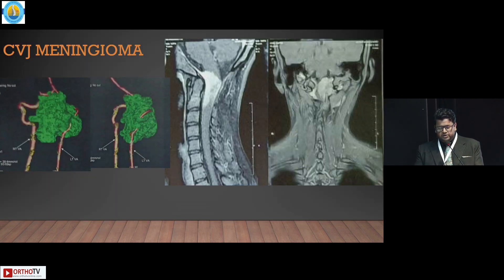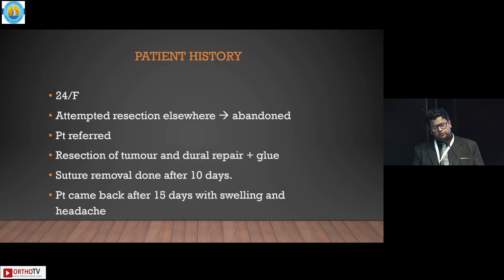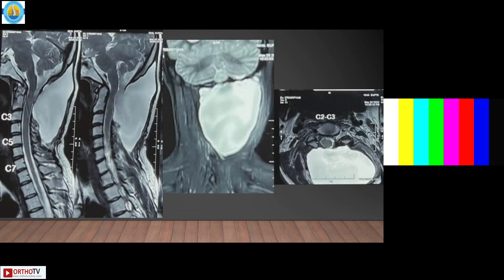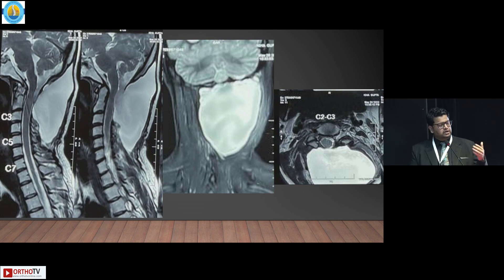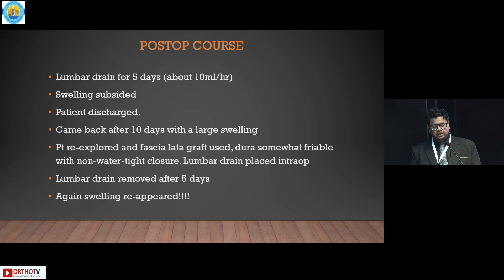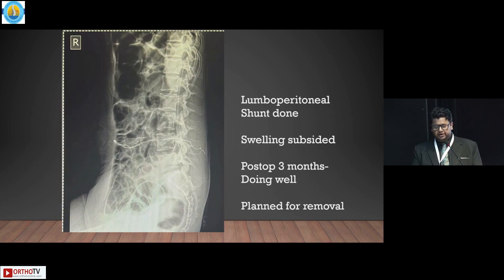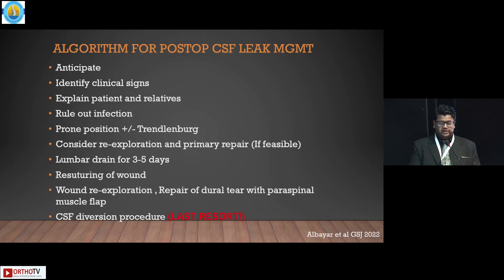Another nasty case — a CVJ meningioma. Again there was a pseudomeningocele: the tumour was resected nicely but left a large pseudomeningocele. I went in, re-explored with fascial autograft, inserted a lumbar drain for 5 days, but the swelling reappeared. Finally I had to go back again and do a lumboperitoneal shunt. Now the patient is doing well.